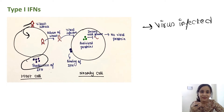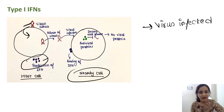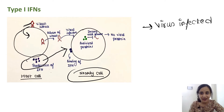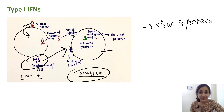These interferons get released from the virus-infected cells. What they will do is bind to nearby uninfected cells. Any type of cell in our human body possesses receptors for interferons on its plasma membrane. So the nearby uninfected cell has receptors, and the interferons bind those receptors. When interferons bind these cell surface receptors, these cells will start to produce antiviral proteins.